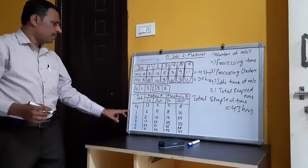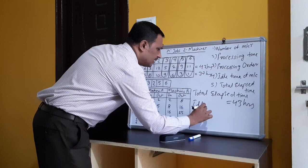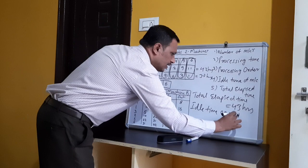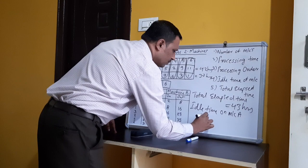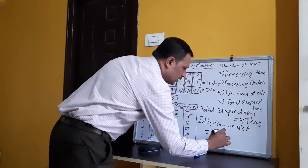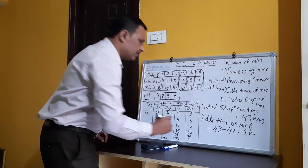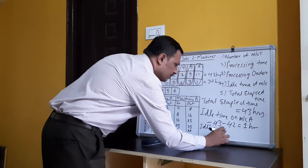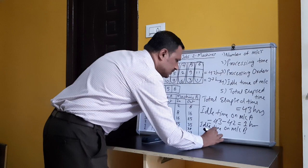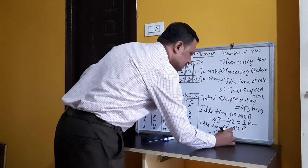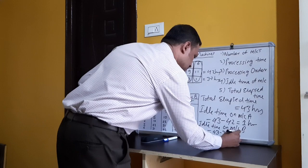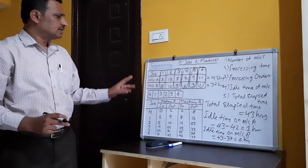Idle time on machine A = total elapsed time − total processing time on machine A = 43 − 42 = 1 hour. Idle time on machine B = 43 − 37 = 6 hours. This completes the sequencing problem for n jobs, two machines.